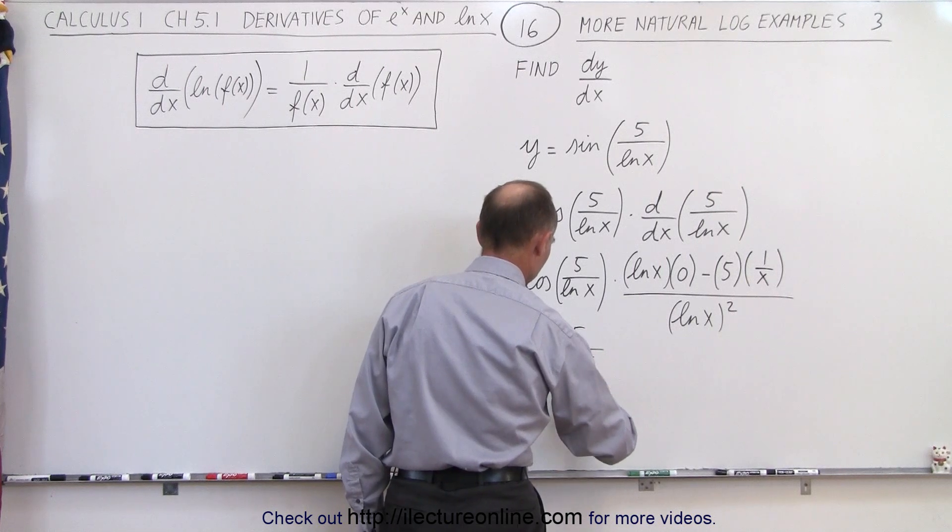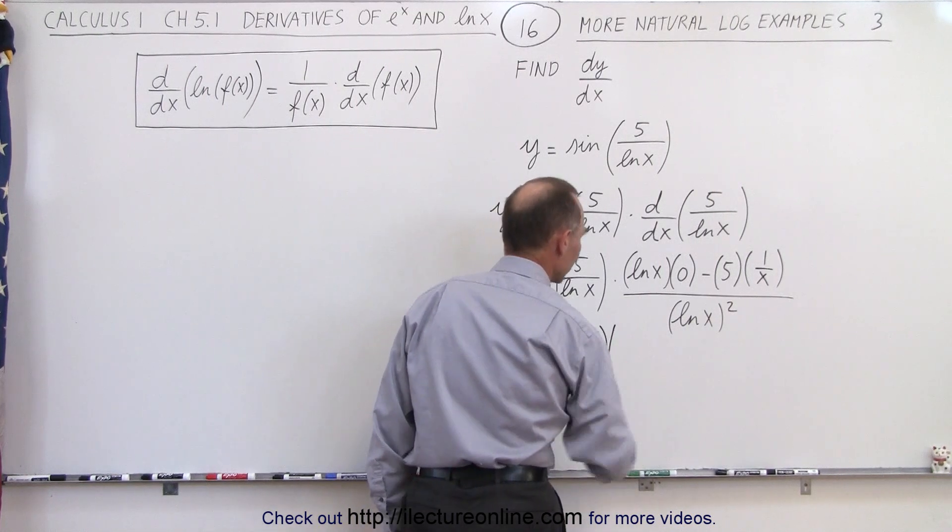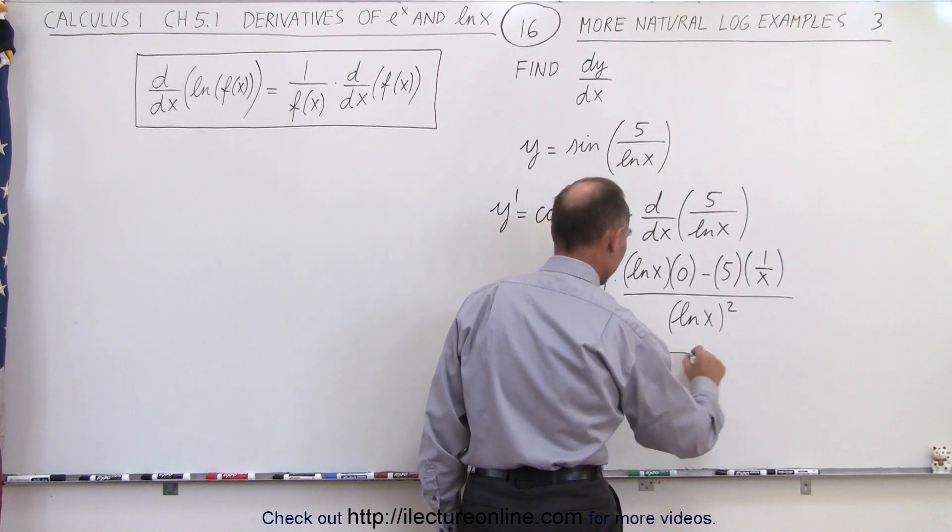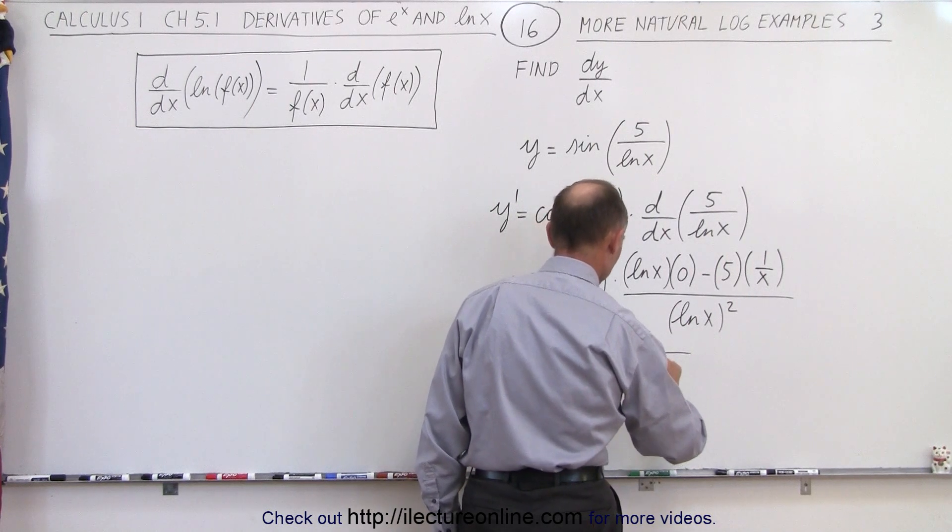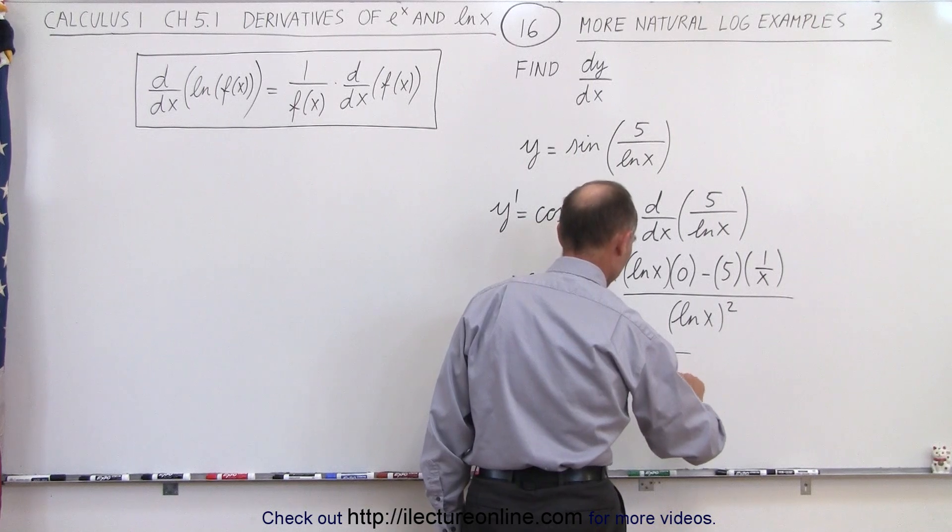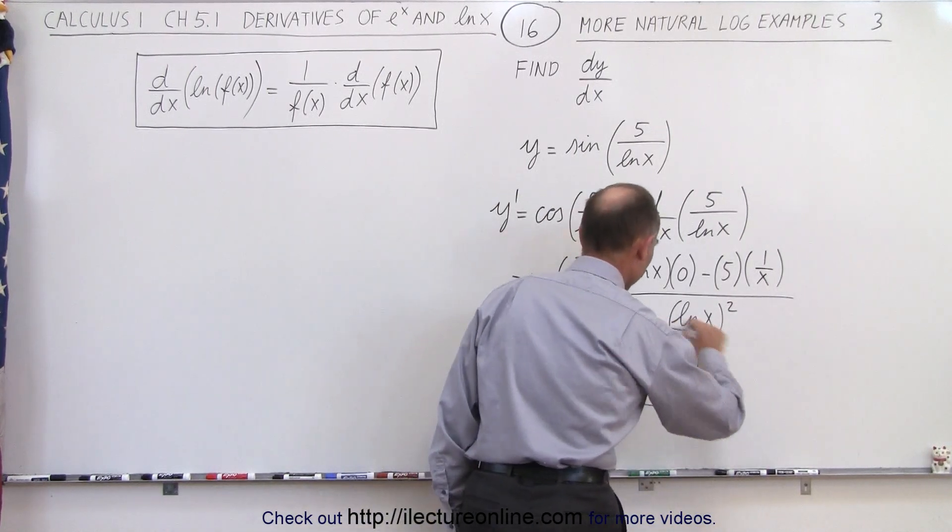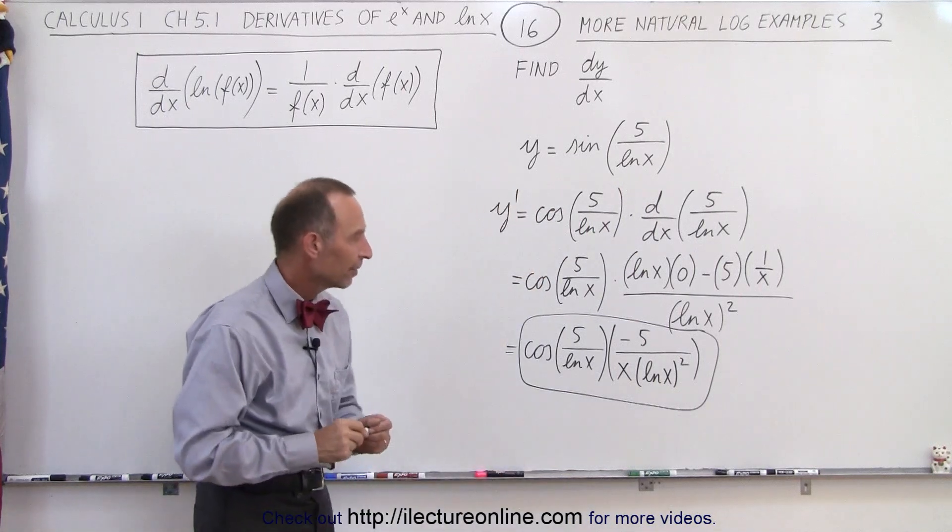times, here we end up with a minus 5 in the numerator, divided by x times the quantity natural log of x squared. And I believe that's probably the best way, best form to leave the answer.